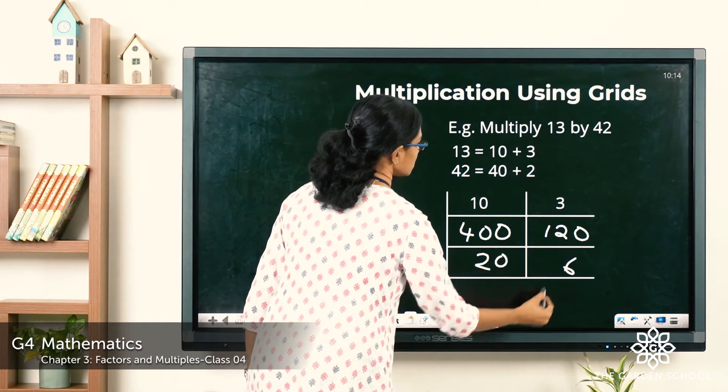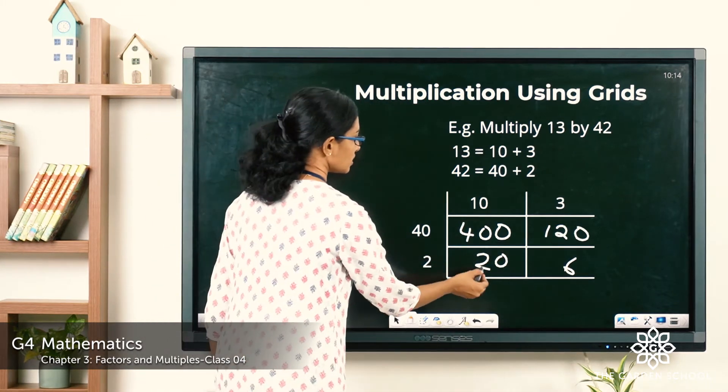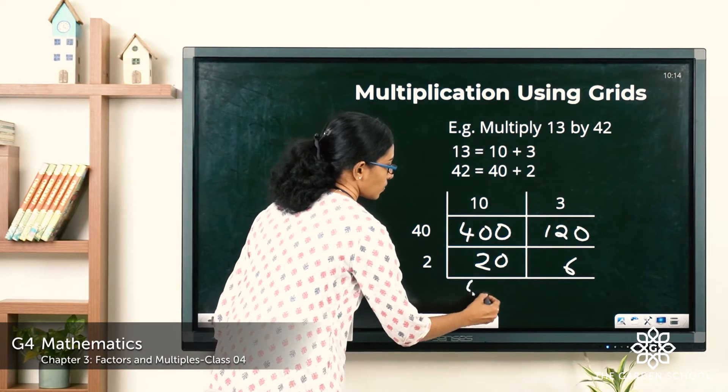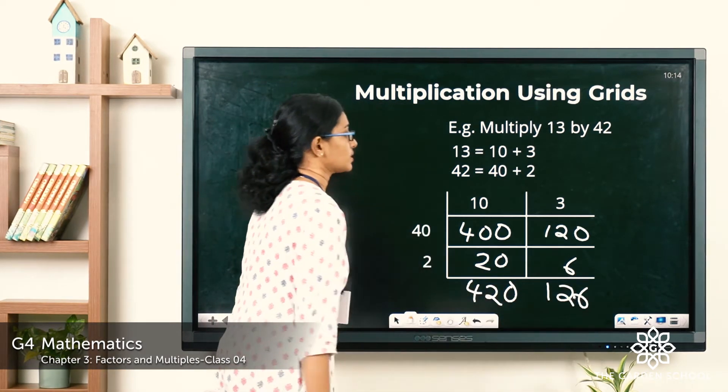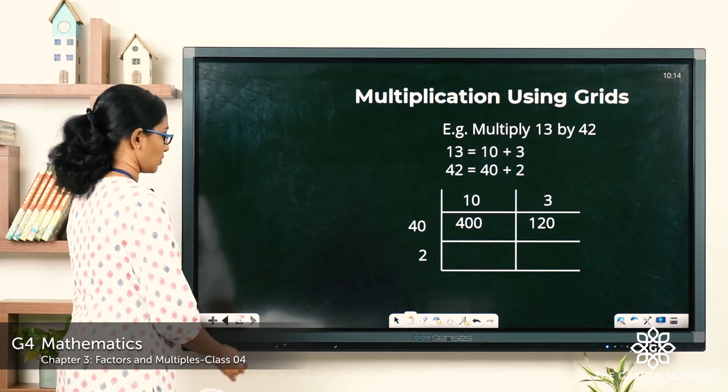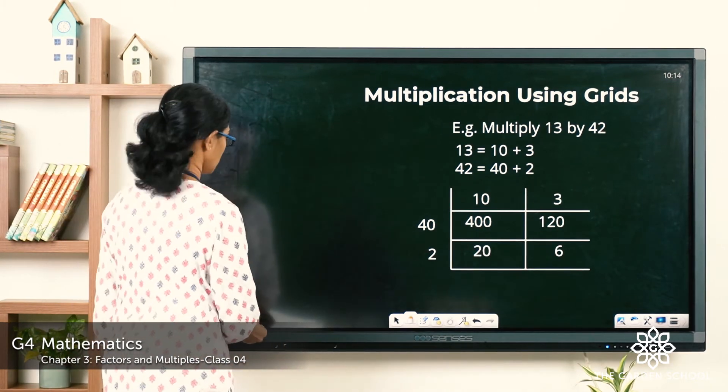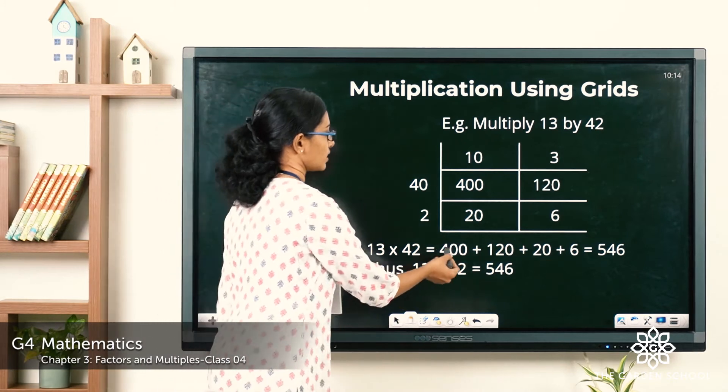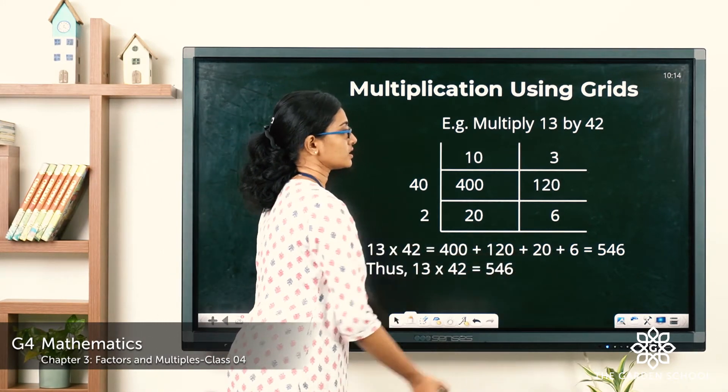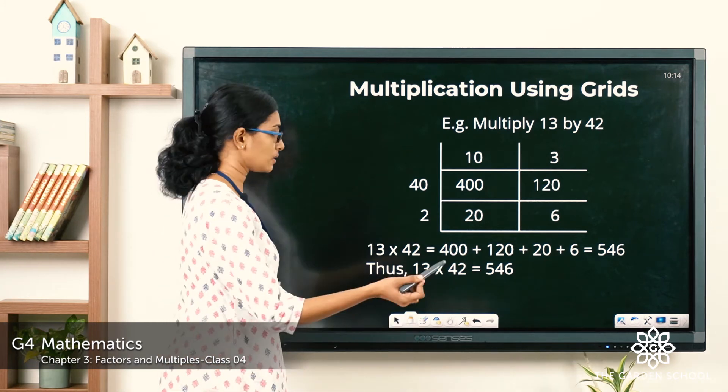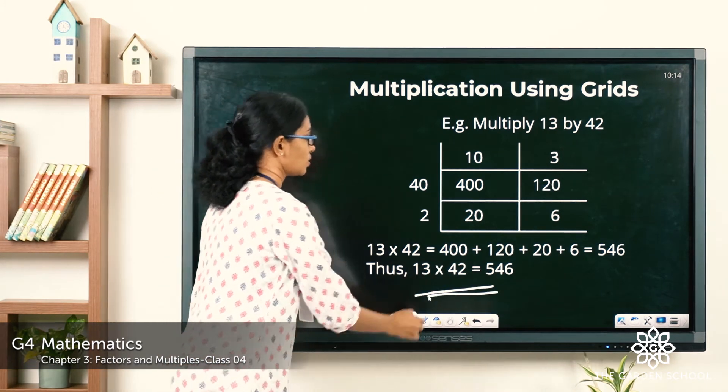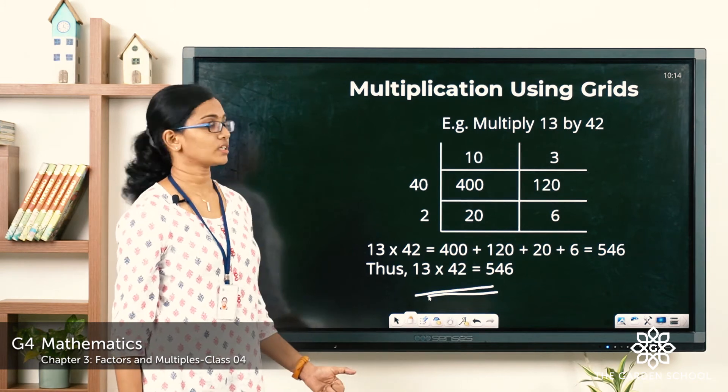So here is 20, here is 6. So here 400 plus 20 is 420, and here it is 126. Adding all this will give you how much? 400 plus 120 plus 20 plus 6 is equal to 546. So that will be the answer to 13 into 42.